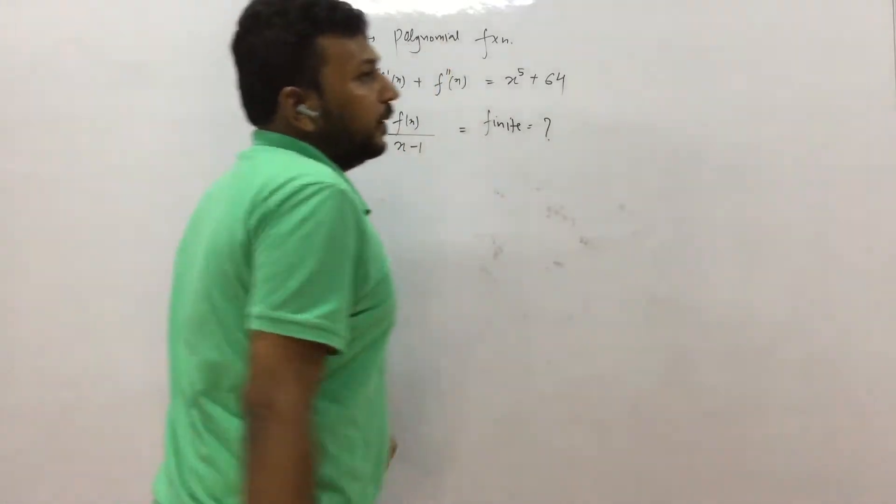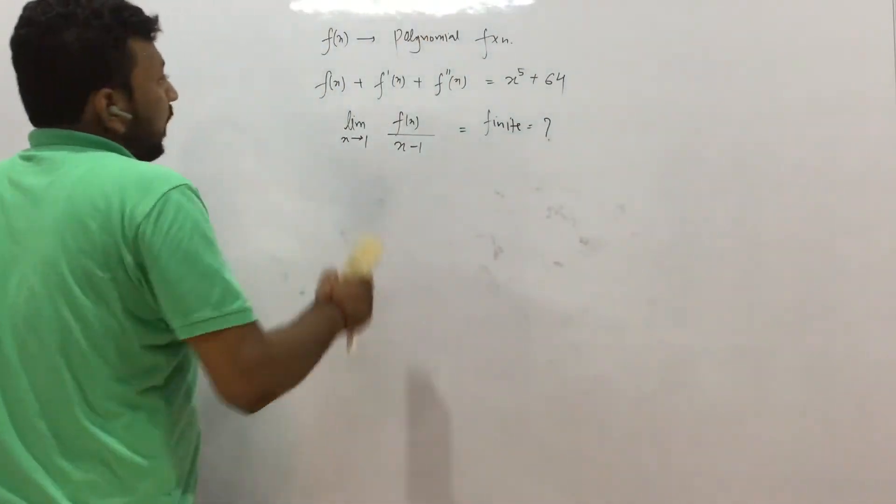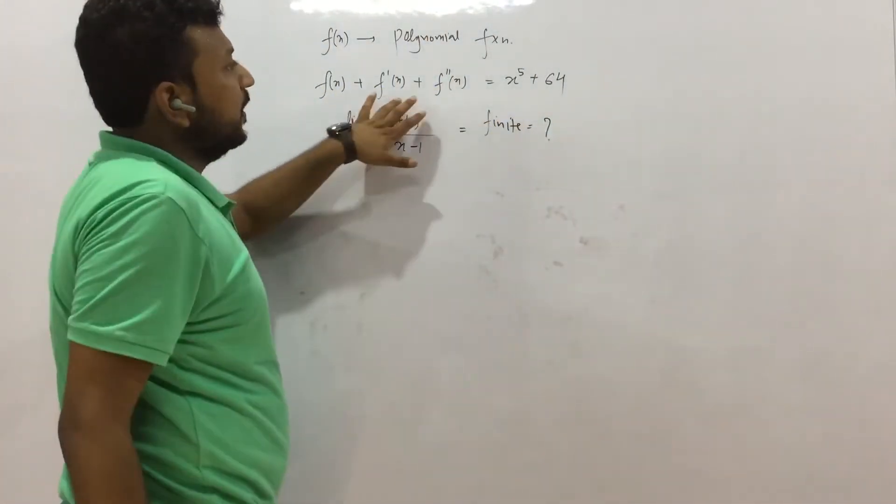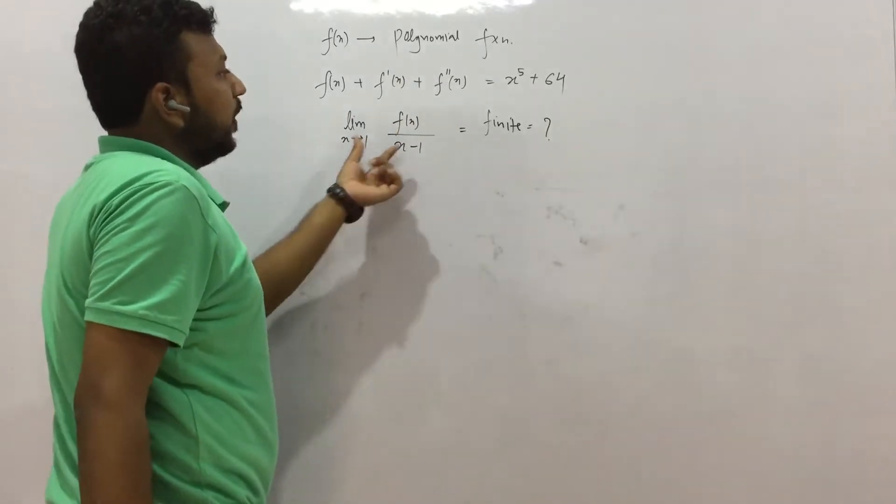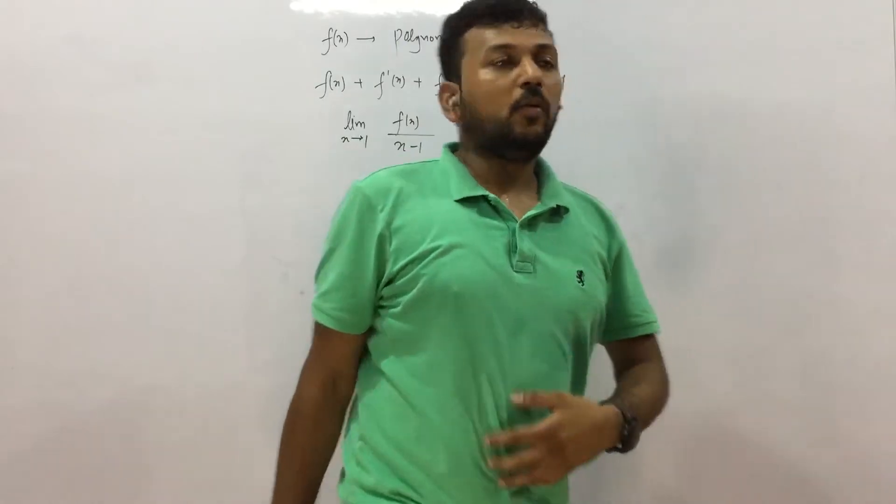f(x) is a polynomial function and this statement is given. So it is polynomial, that means you can consider it as differentiable and continuous, right? And this statement is given: f'(x), f''(x), and limit x tending to 1 of f(x)/(x-1) is finite.